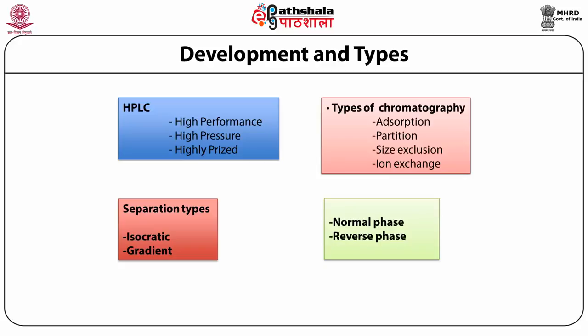HPLC is an instrument used to separate and quantify compounds from a mixture. When differentiating the methods employed in HPLC, you divide them into two types basically: isocratic and gradient. Isocratic means the solvents used are always kept in the same proportion and are not changing. When the solvents change mutually along with time, it is called a gradient.